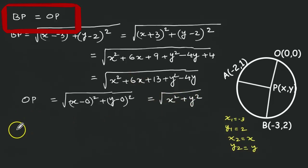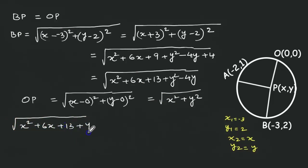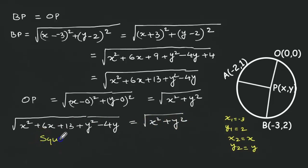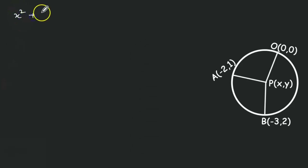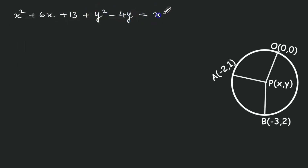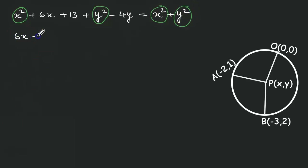Simplifying BP gives root of x squared plus 6x plus 13 plus y squared minus 4y. OP equals root of x squared plus y squared. Since BP equals OP, we equate them and square both sides: x squared plus 6x plus 13 plus y squared minus 4y equals x squared plus y squared. Cancelling x squared and y squared, we get 6x plus 13 minus 4y equals 0, which gives 6x minus 4y equals minus 13. This is equation number 2.